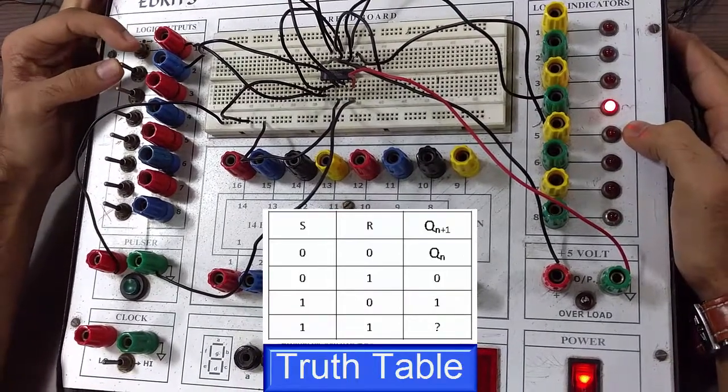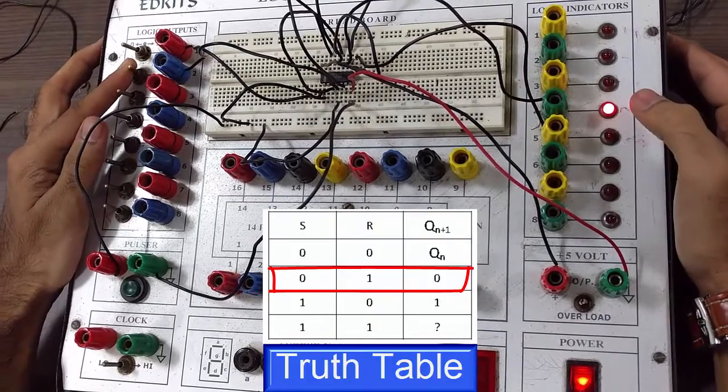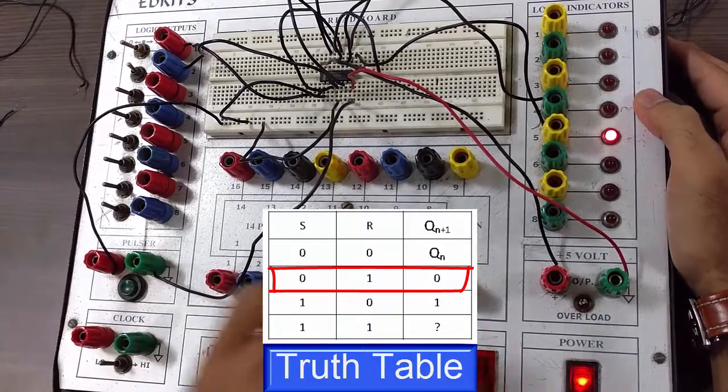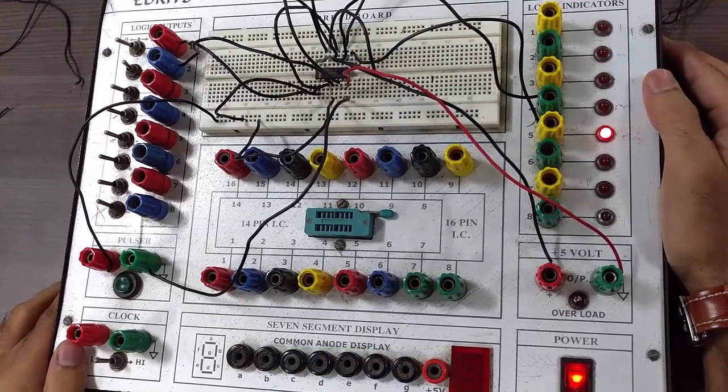And now for reset condition, we should get Qn bar as 1 and Qn as 0. We will give another clock. Now you can see Qn bar is 1 and Qn is 0. Hence the truth table is verified.